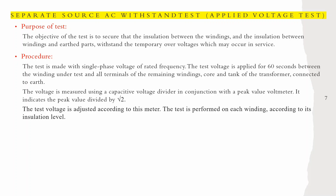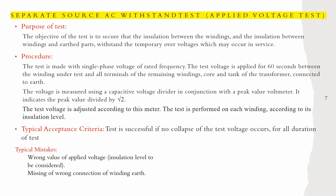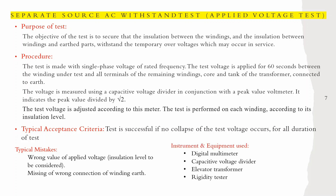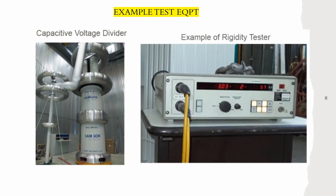The test voltage is adjusted according to the meter. The acceptance criteria: the test is successful if no collapse of the test voltage occurs for the full duration of the test. Typical mistakes: wrong applied voltage value, missing or wrong connections of winding to earth. Instruments and equipment used: digital multimeter, capacitive voltage divider, elevator transformer, and rigidity tester. Examples of the capacitive voltage divider and rigidity tester are shown, and these are also used during factory acceptance testing.